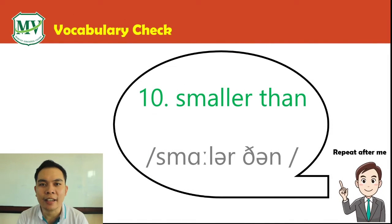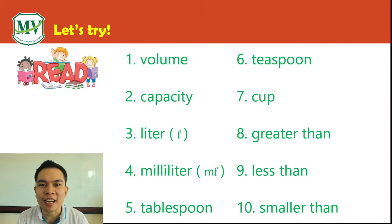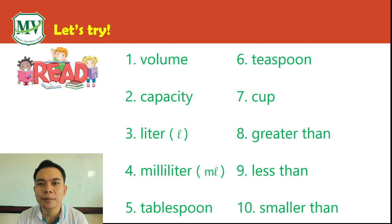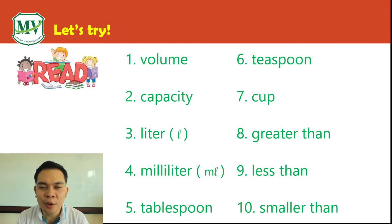Number 10: smaller than. Now you try. Number 1: volume. Number 2: capacity. Number 3: liter. Number 4: milliliter. Number 5: tablespoon. Number 6: teaspoon. Number 7: cup. Number 8: greater than. Number 9: less than. Number 10: smaller than. Very good!